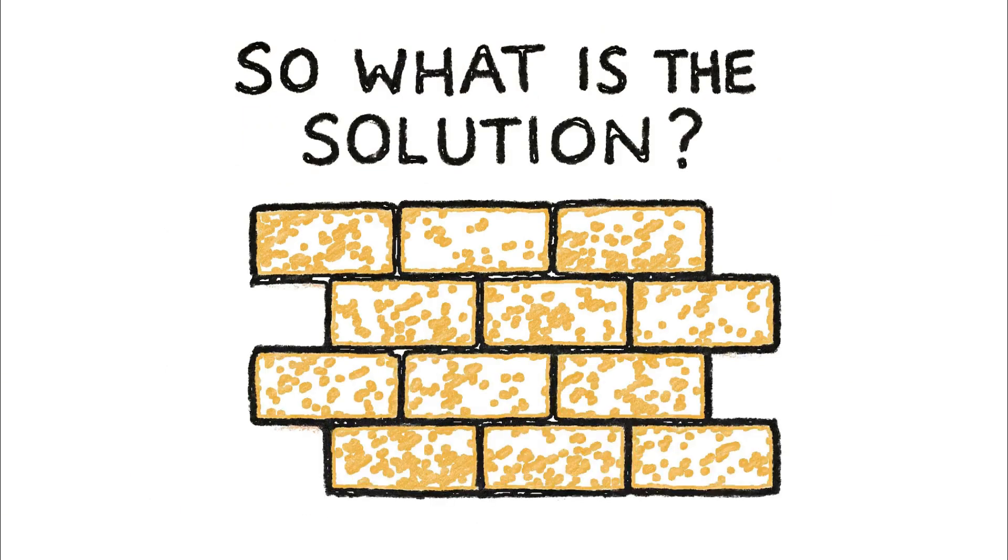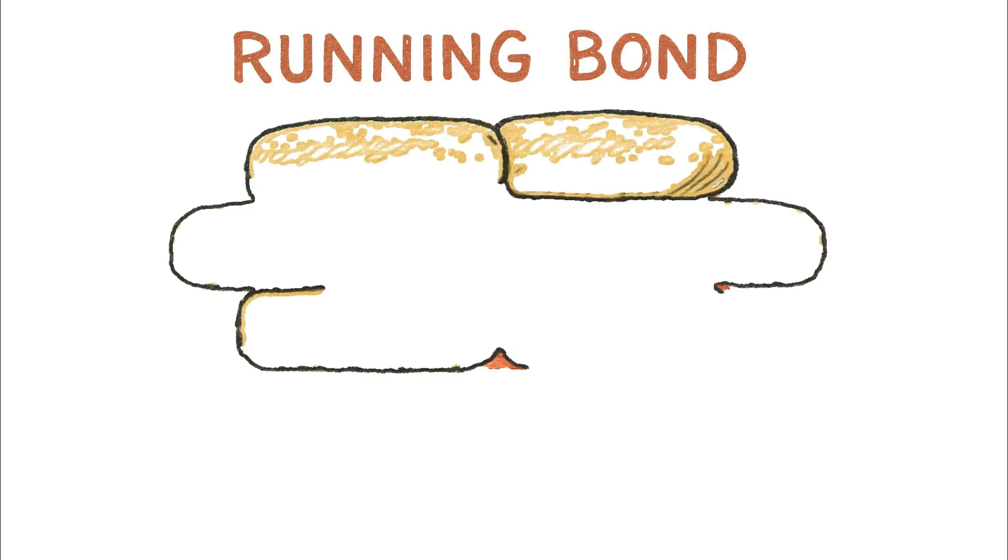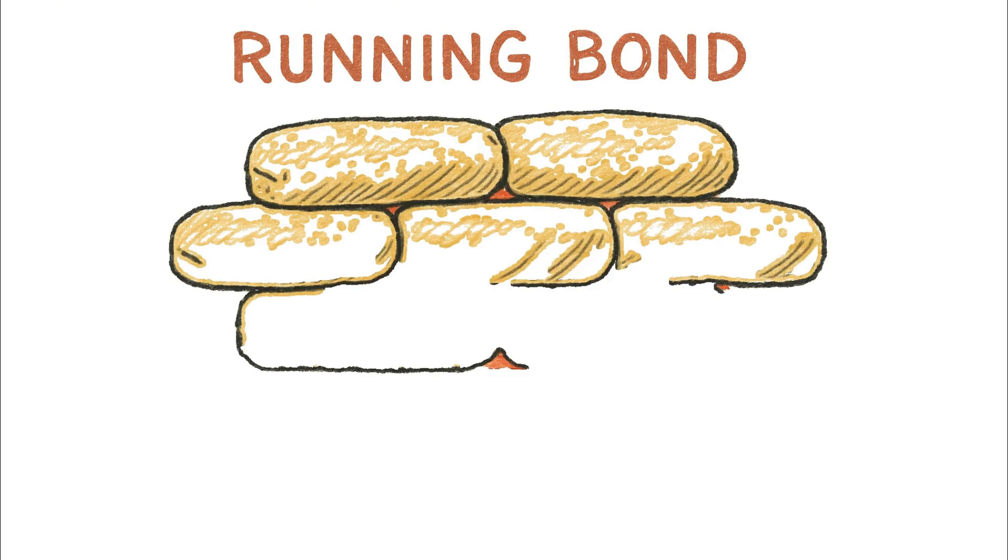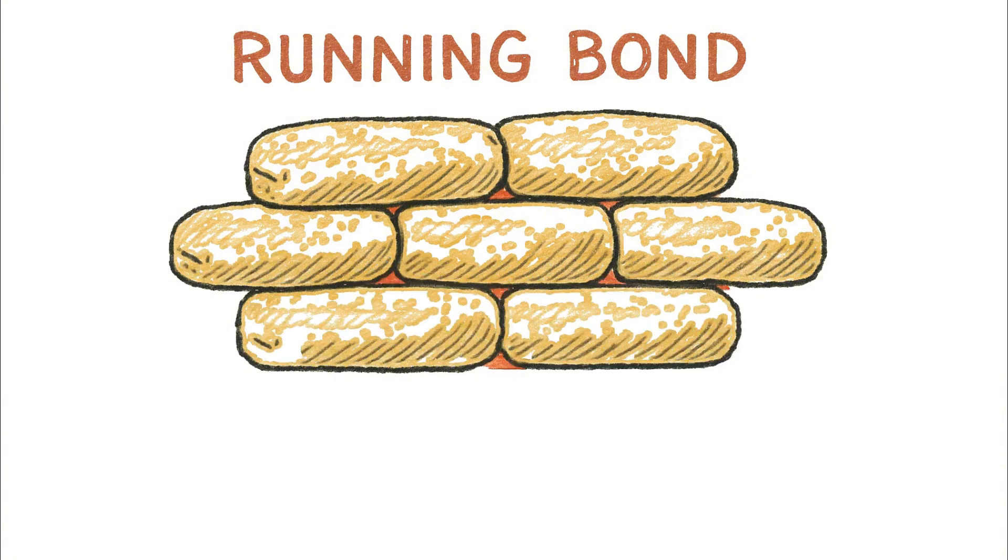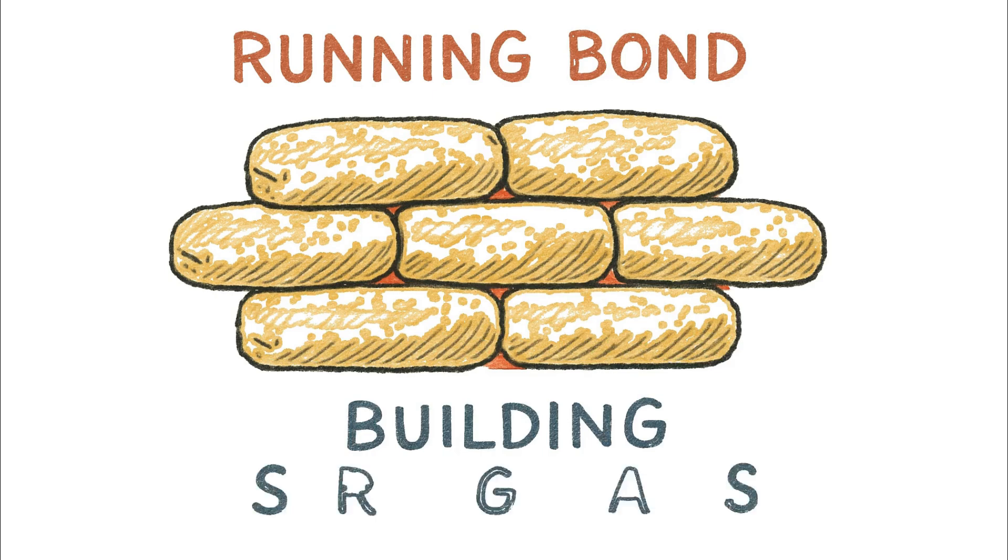So what is the solution? Thankfully, it is as simple as the flaw is deadly, because the wall must be built so those continuous seams don't exist. And this is accomplished by using a running bond and staggering the joints, the same way masons have been building strong walls for thousands of years.